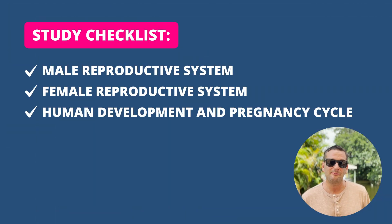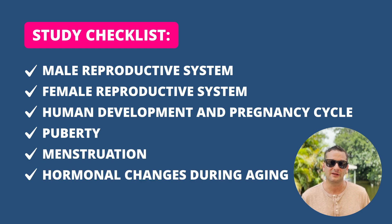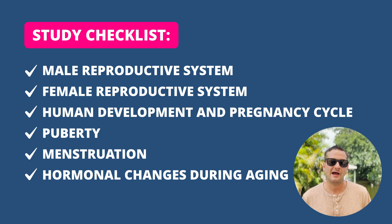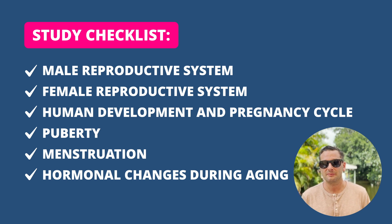For the reproductive system, you need to understand its components at a biological and medical level — the terms used for both male and female systems — and how sexual reproduction processes work in humans, from development and puberty through sexual maturity. You also need to understand what the male and female reproductive systems each contribute to the reproduction and birth of an infant.